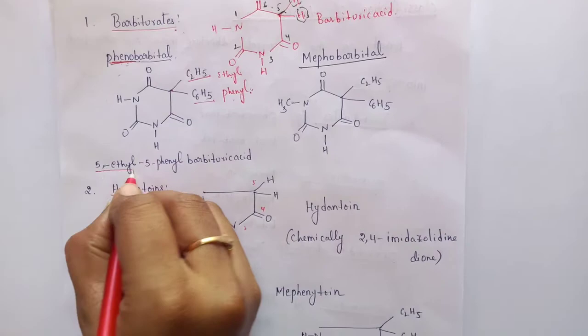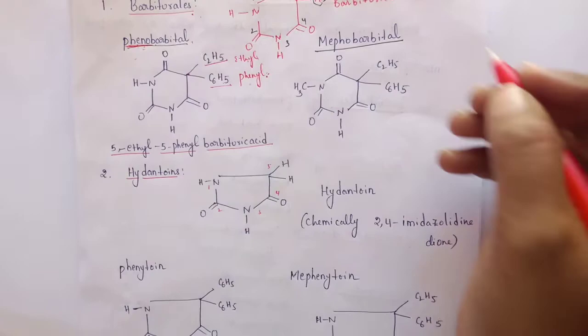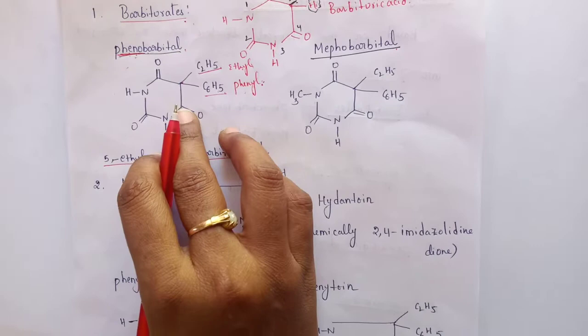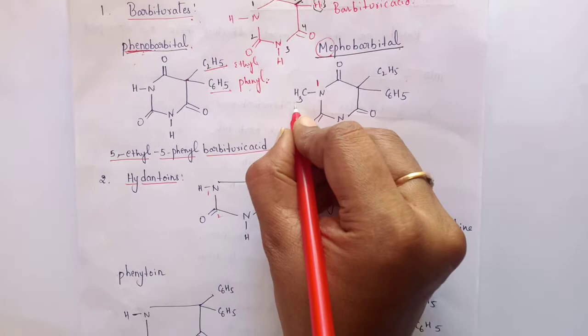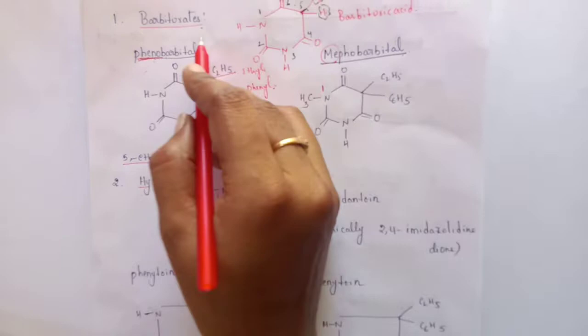This is the IUPAC name for phenobarbitone. Coming to the next one, mephobarbitone, which possesses a similar structure to phenobarbitone. But along with phenyl and ethyl, it also possesses a methyl group. 'Mepho' indicates a methyl group. At the 1st position, the first nitrogen atom possesses a methyl group. Both come under the category of barbiturates.